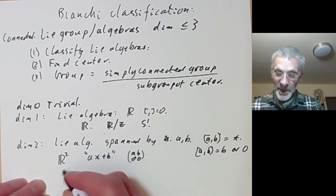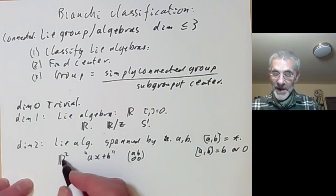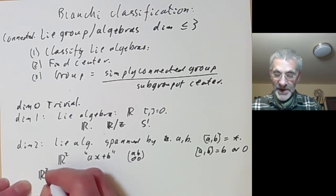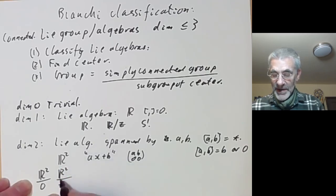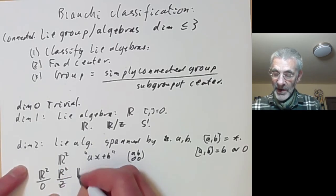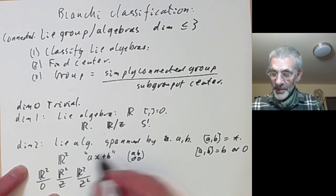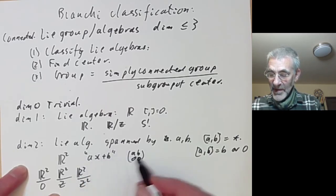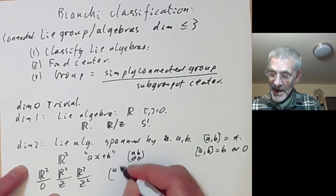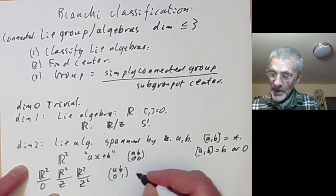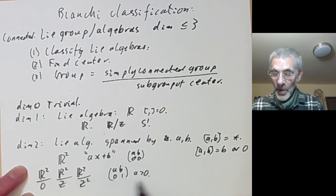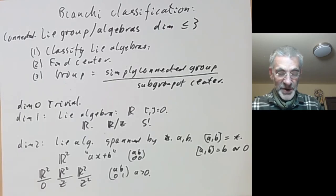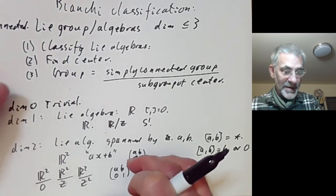The Lie algebra can either be R² with the trivial bracket, or it can be the Lie algebra of the ax+b group, which you can think of as consisting of all matrices of the form (a, b; 0, 0). The corresponding groups: we can take R² modulo zero, or R² modulo a discrete group isomorphic to Z, or R² modulo Z². For the ax+b algebra, the corresponding group is the matrices (a, b; 0, 1) with a > 0. This group has no centre, so there are exactly four connected Lie groups of dimension two, up to isomorphism.